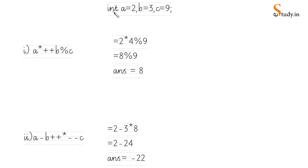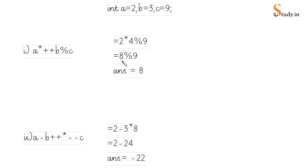Let's take up the next example: a = 2, b = 3, c = 9. The expression is: a * ++b % c. We substitute a = 2. Since ++b is pre-increment, we increase b from 3 to 4 and use 4. So: 2 * 4 % 9. Moving left to right: 2 * 4 = 8, then 8 mod 9. Since 8 is smaller than 9, the remainder is 8 itself. The answer is 8.